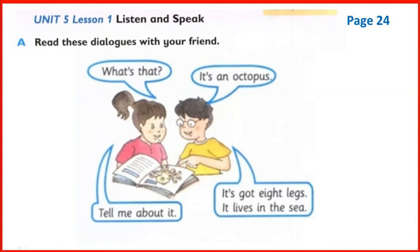She asks: 'What's that?' He replies: 'It's an octopus.' She asks: 'Tell me about it.' He replies: 'It's got eight legs. It lives in the sea.' Let's repeat - What's that? It's an octopus. Tell me about it. It's got eight legs. It lives in the sea.